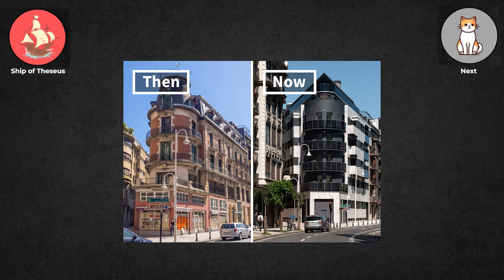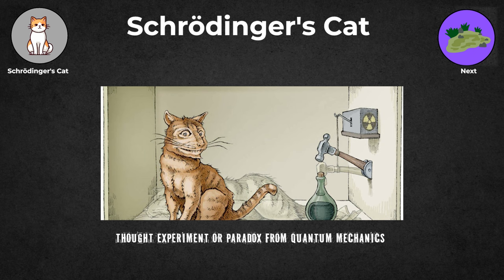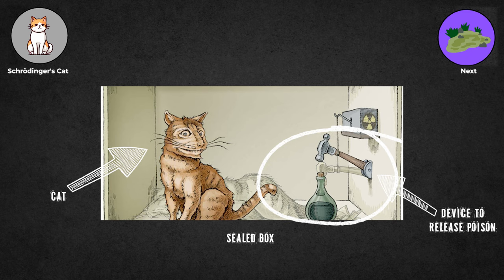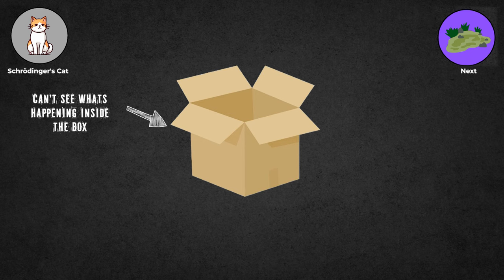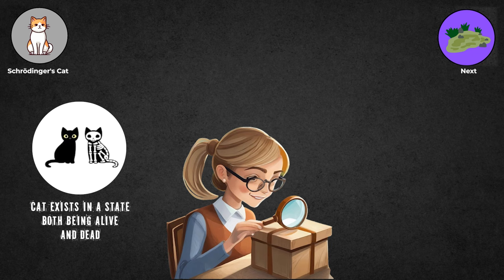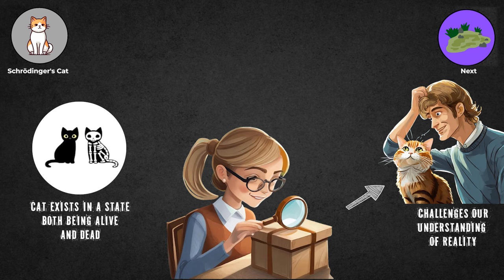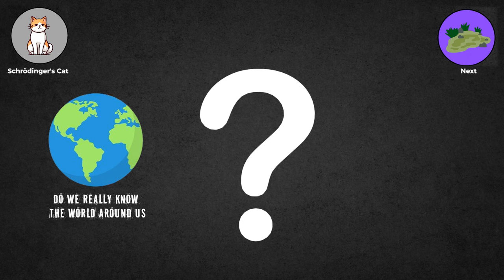Schrödinger's Cat: This is a thought experiment or paradox from quantum mechanics. Imagine a sealed box with a cat inside. Inside the box, there's also a device that can release poison at any moment. We can't see what's happening inside the box. The experiment proposes that until you open the box, you don't know if the cat is alive or dead. Therefore, until observation, the cat exists in a state of both being alive and dead at the same time. This experiment challenges our understanding of reality and the role of observation in shaping it. It makes us question how much we really know about the world around us, just like when you don't know if your pet is sleeping or hiding.